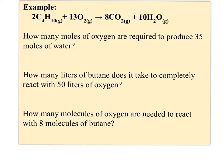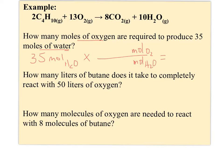The first question asks: how many moles of oxygen are required to produce 35 moles of water? Using my usual strategy, I write down what I've been given: 35 moles of water. I'm being asked to determine moles of oxygen. From the equation, I can see that 13 moles of oxygen produce 10 moles of water — a 13 to 10 ratio. So I take 35 times 13 divided by 10, and I should expect 45.5 moles of O2.